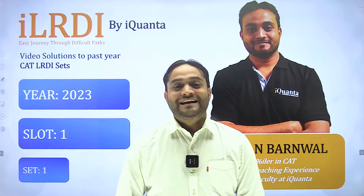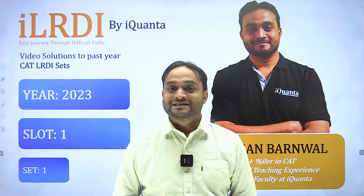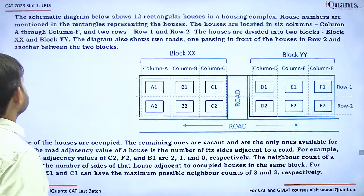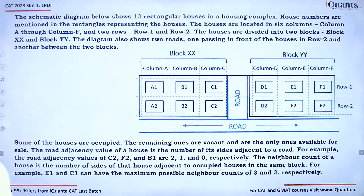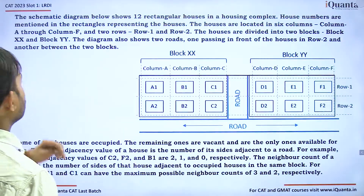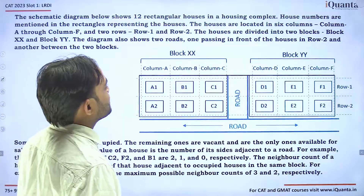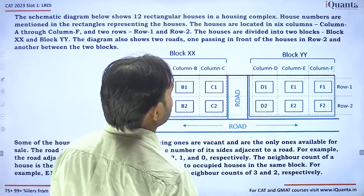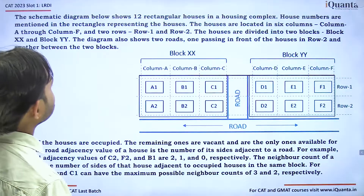Hello everyone. In the ILRDI series today, I am going to discuss a set from CAT 2022, first slab. This set is regarding Block XX and Block YY. The schematic diagram below shows 12 rectangular houses in a housing complex, with house numbers mentioned in the rectangles representing the houses.